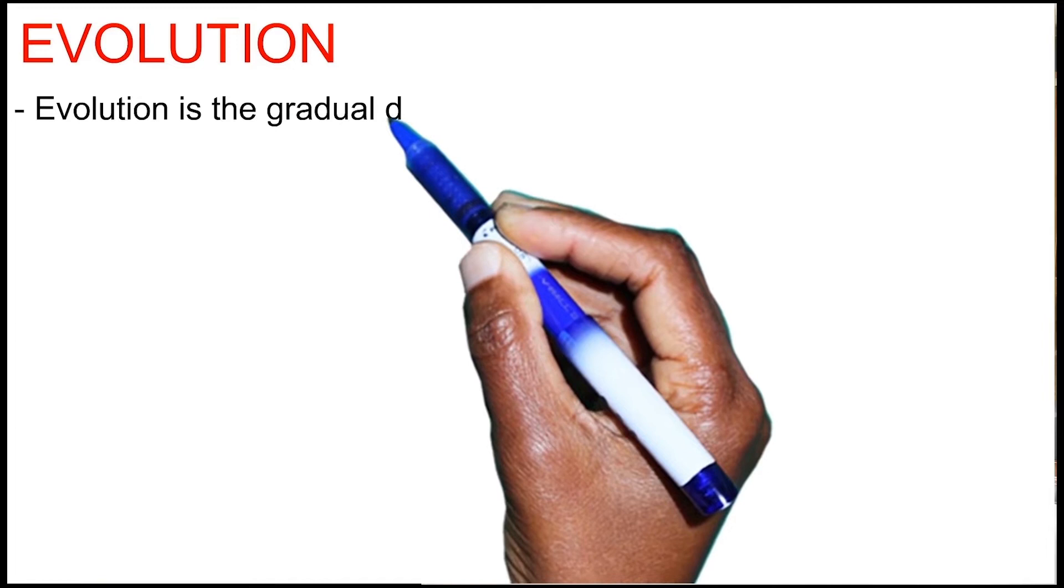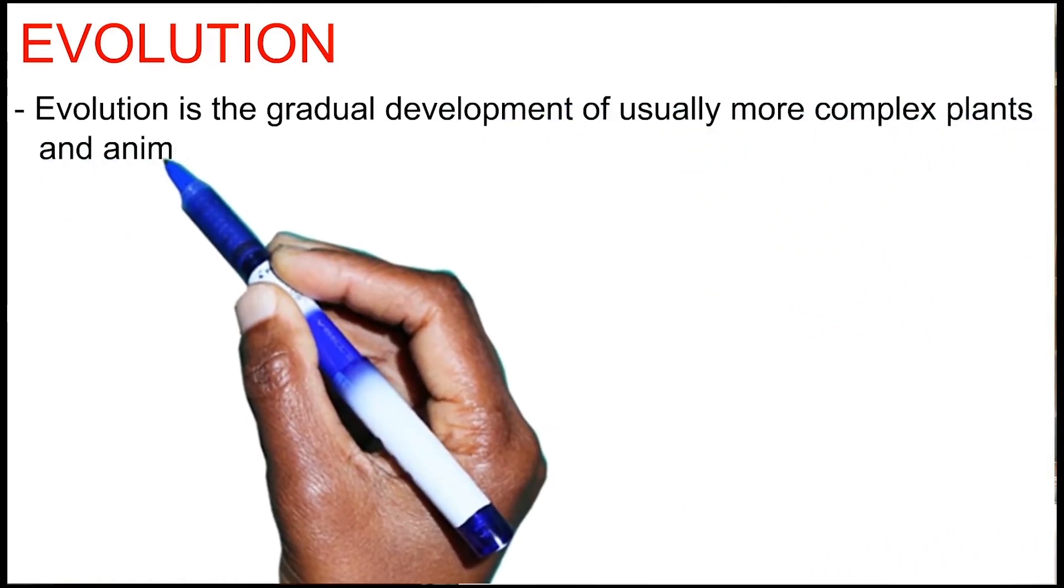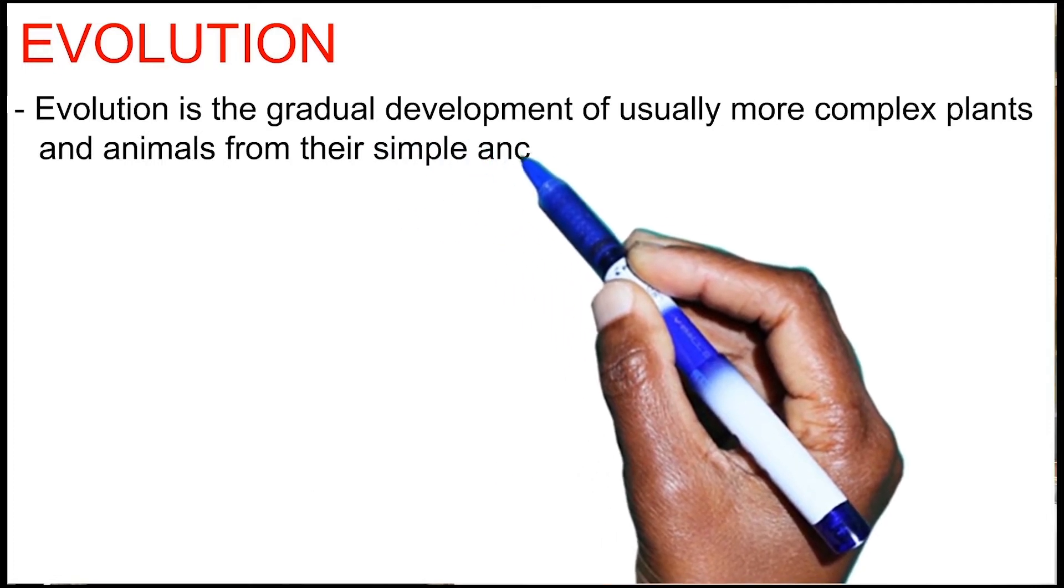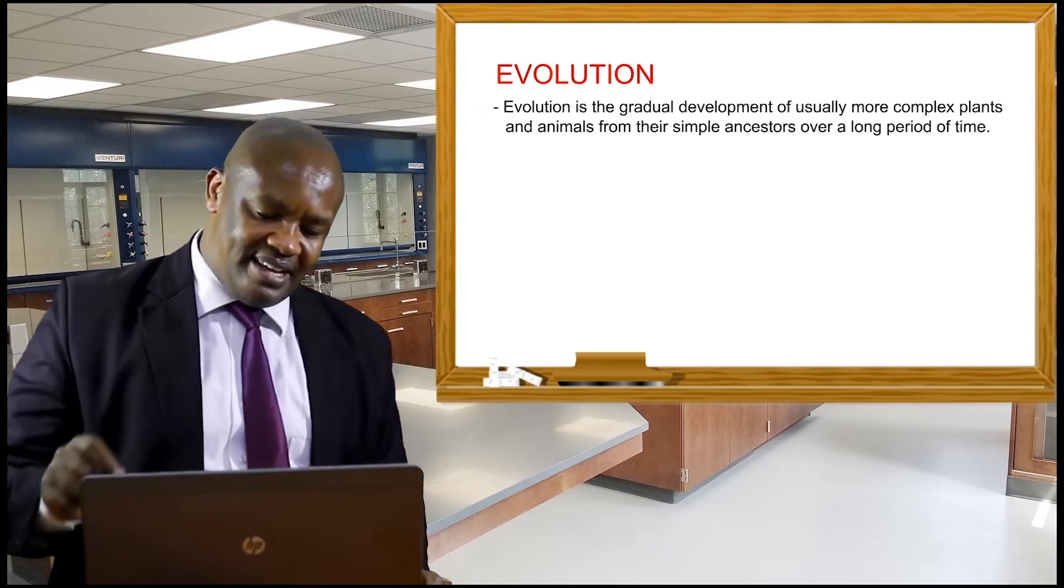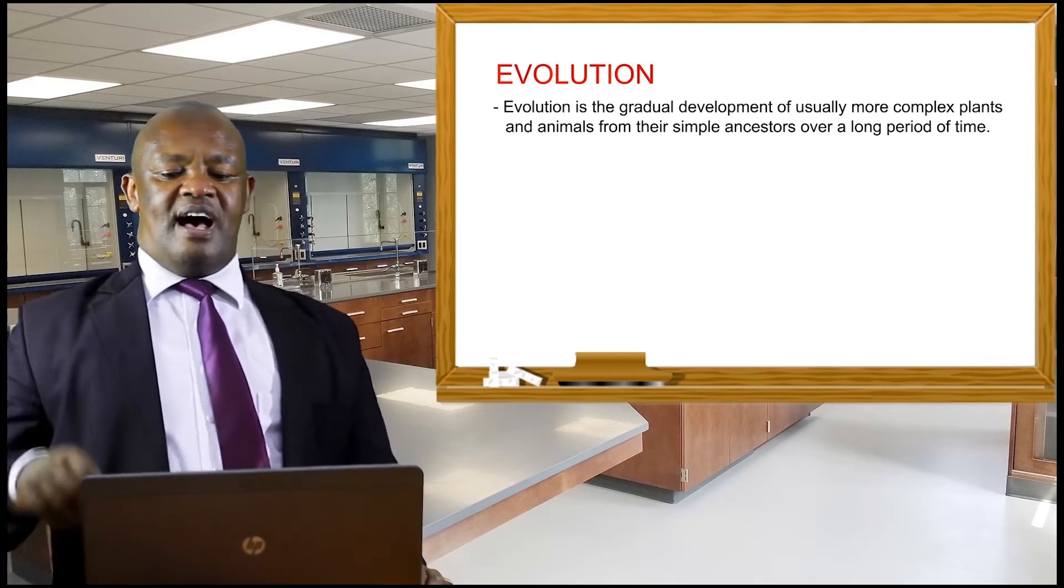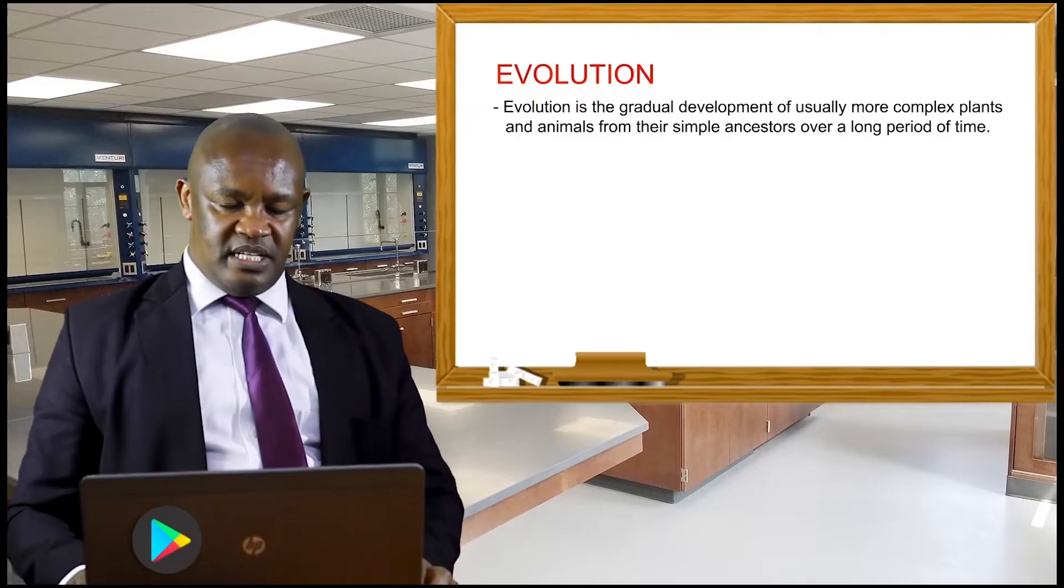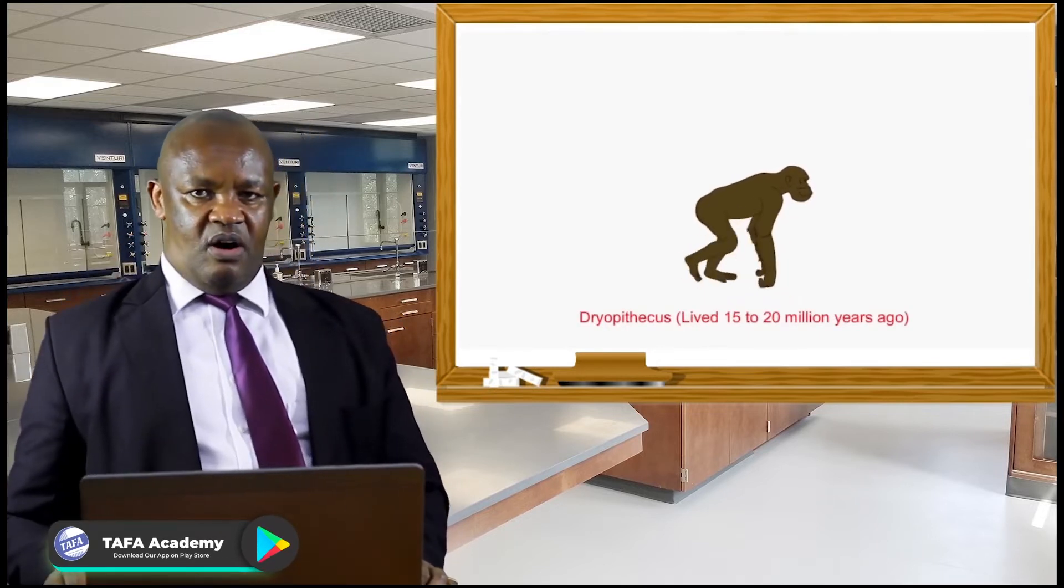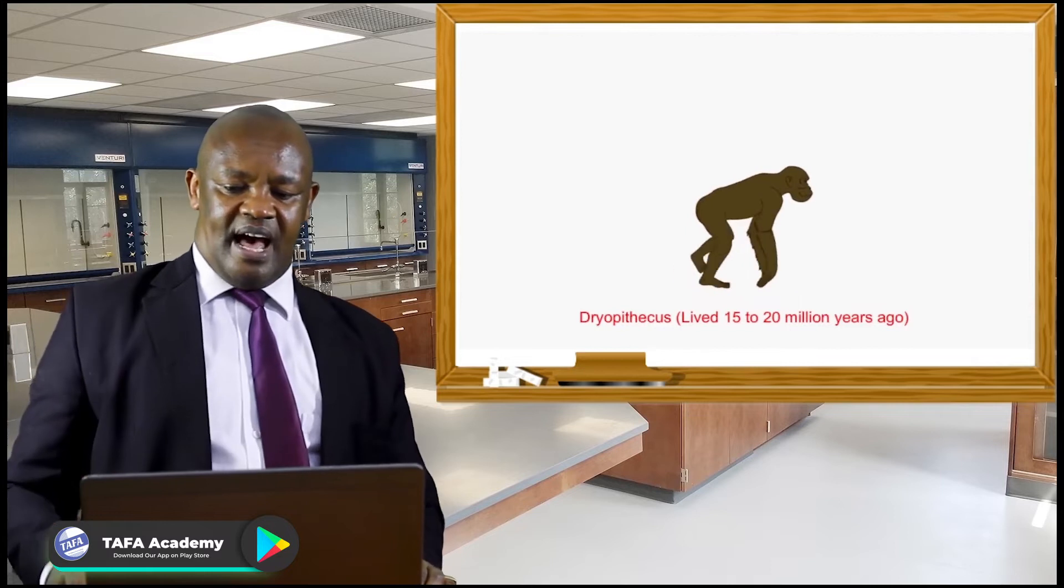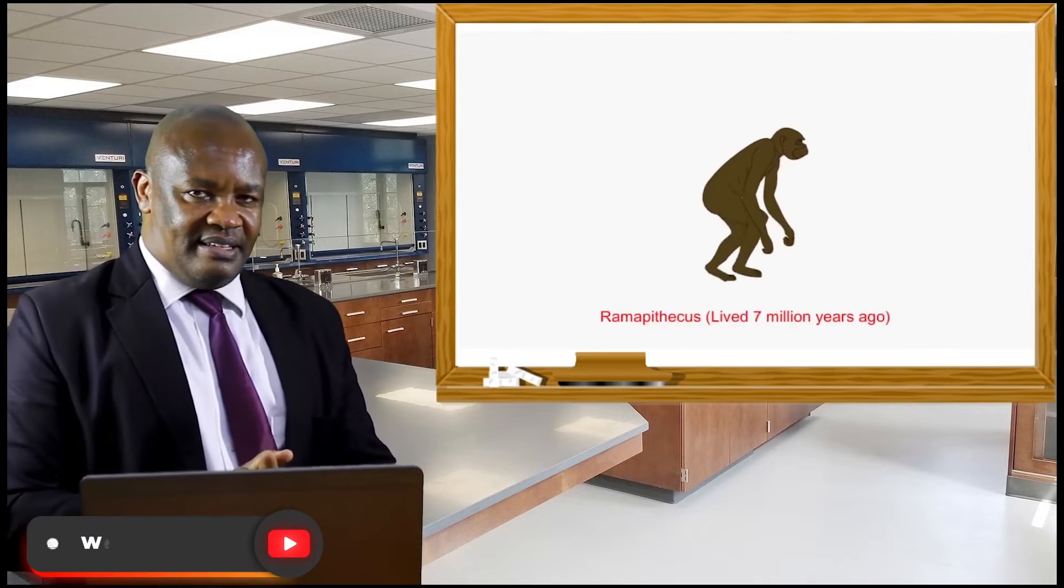From that word we are able to understand what is evolution, and we can define evolution as the gradual development of usually more complex plants and animals from their simple ancestors over a long period of time.